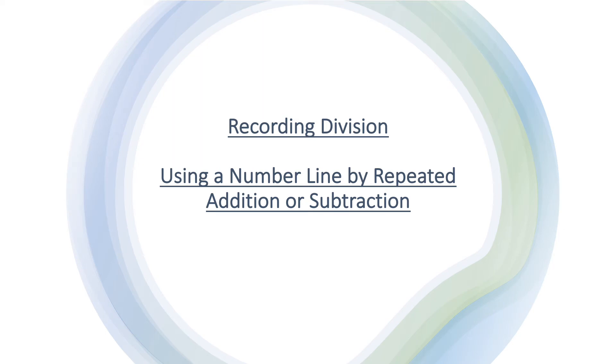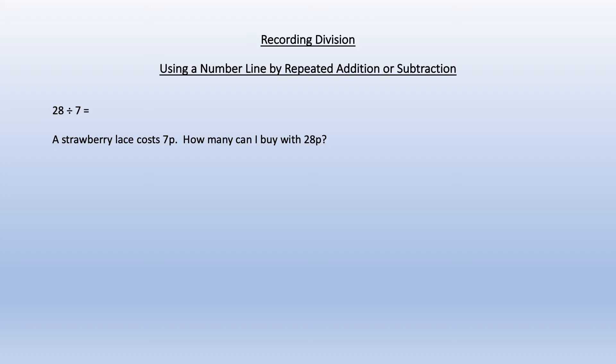So the next progressive stage is using a number line to record either repeated addition or subtraction. And our example here is 28 divided by 7 and put into context: a strawberry lace costs 7p, how many can I buy with 28p?